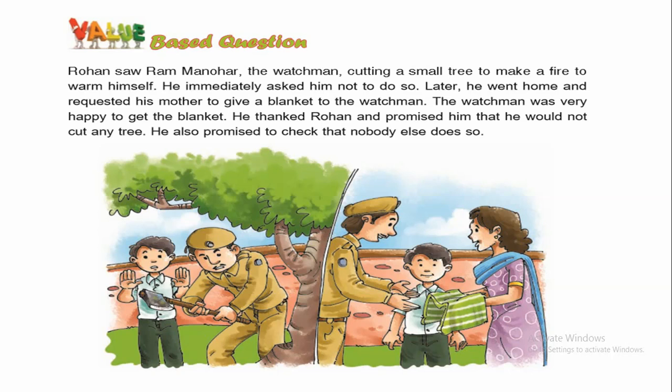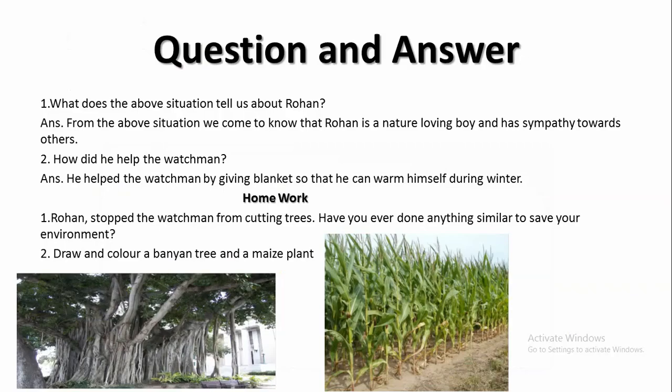Now the questions related to this paragraph. Question 1: What does the above situation tell us about Rohan? From the paragraph we come to know that Rohan is a nature-loving boy and has sympathy towards others. The next question: How did he help the watchman? He helped the watchman by giving a blanket so that he could warm himself during winter.